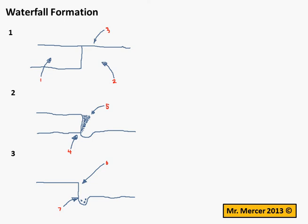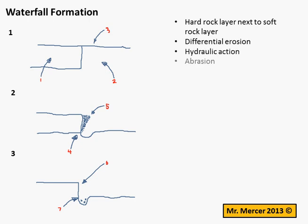So in summary, mention the hard rock next to the soft rock and differential erosion. Once you get to label four, make sure you talk about hydraulic action and abrasion wearing away the softer rock. By point five,